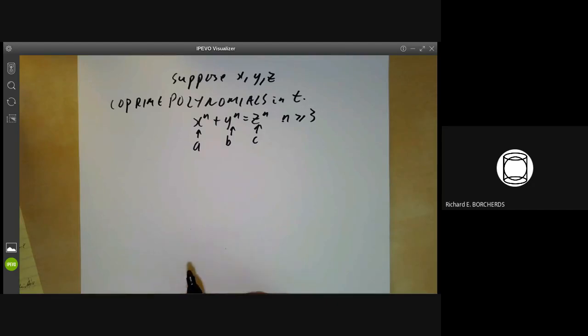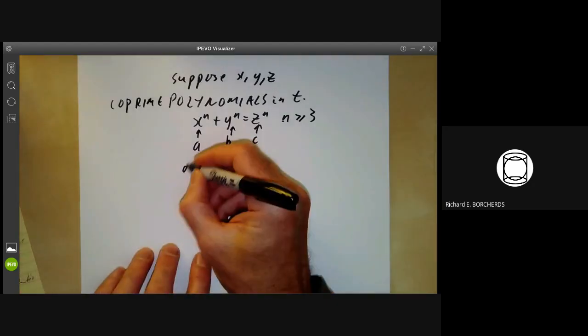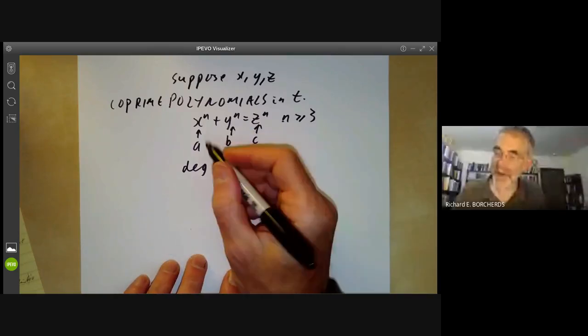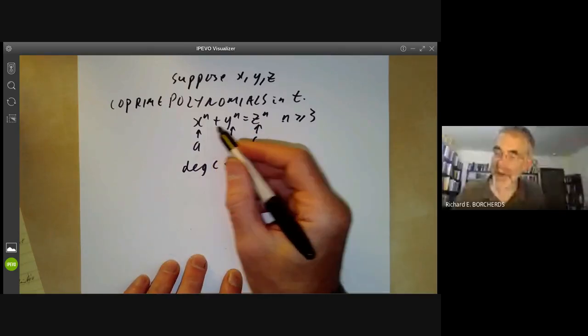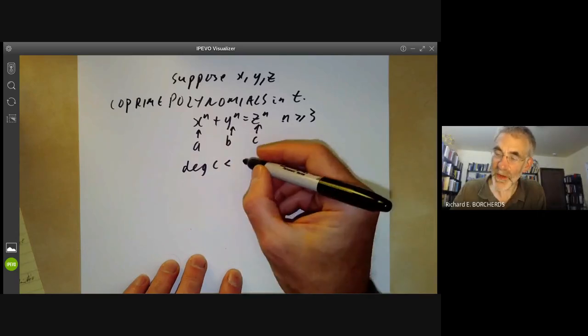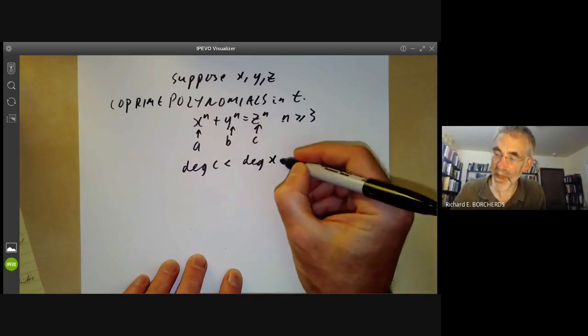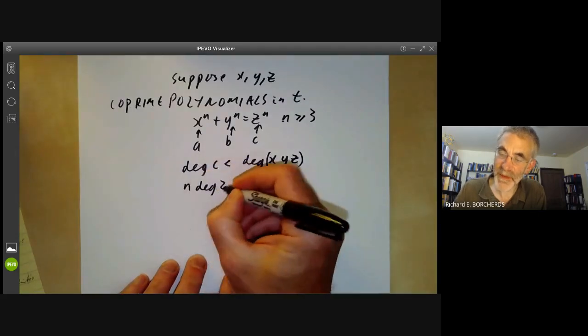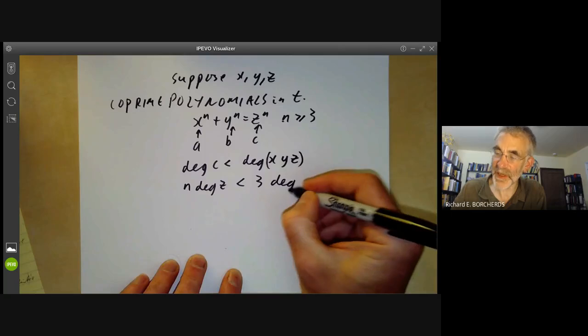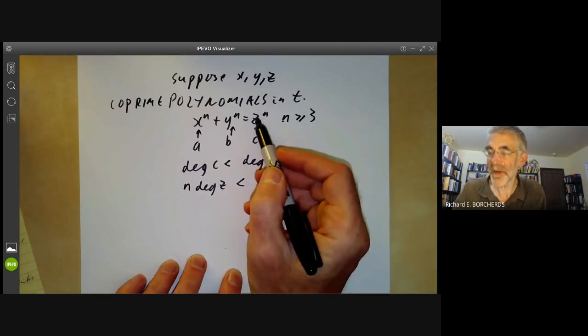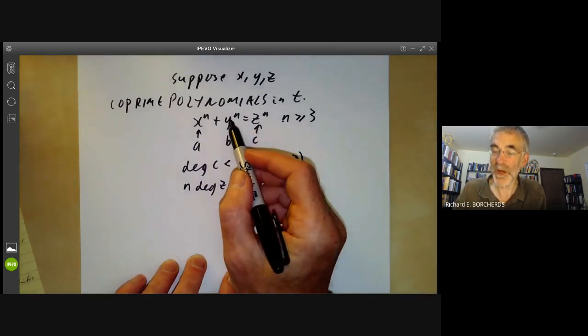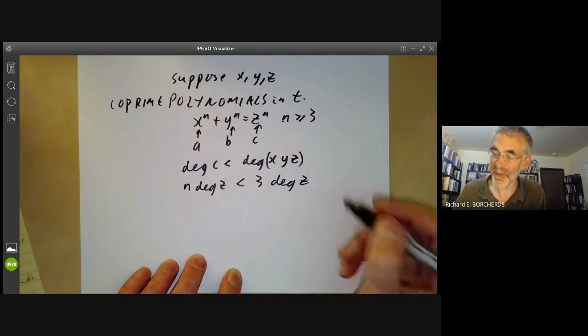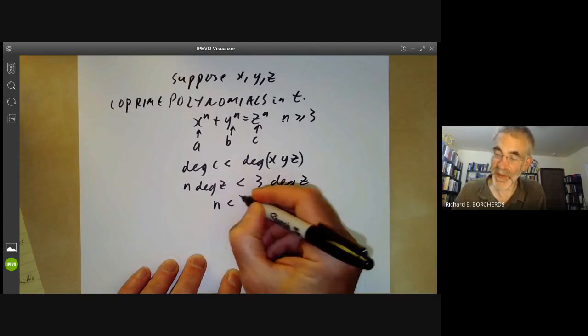And then we find that the degree of C is less than the number of distinct zeros, which is at most the degree of X, Y, Z. So N times the degree of Z is less than three times the degree of Z. Here we're taking, we may assume that the degree of Z is at least equal to the degree of X and Y by swapping them around if necessary. So this gives N less than three, which is what we wanted to prove.